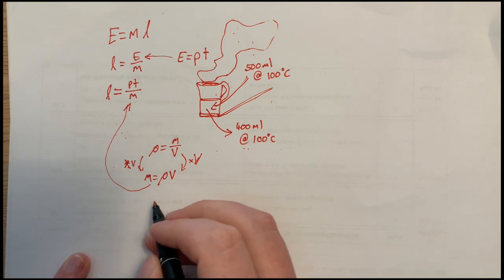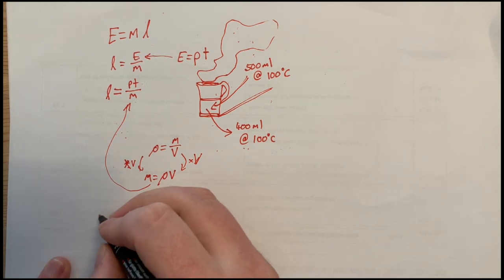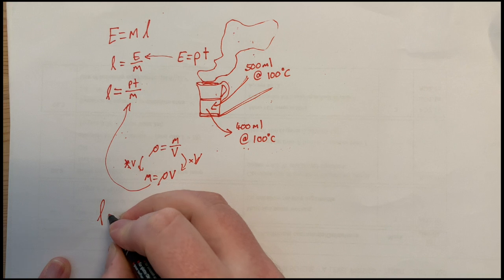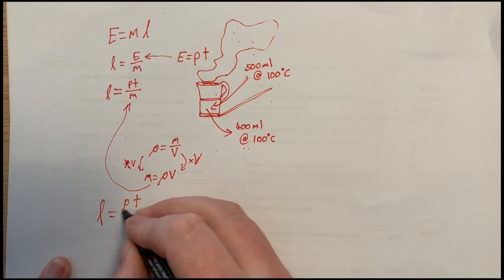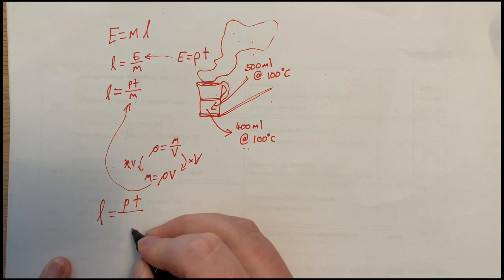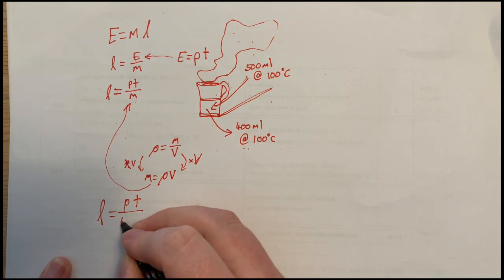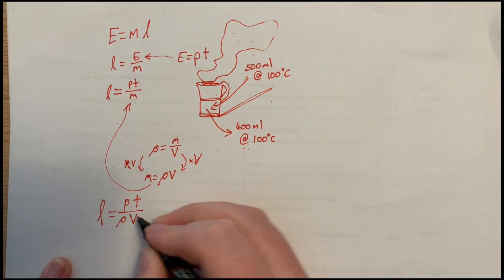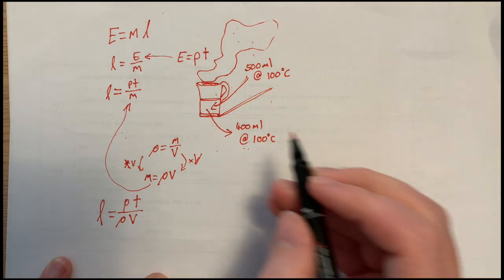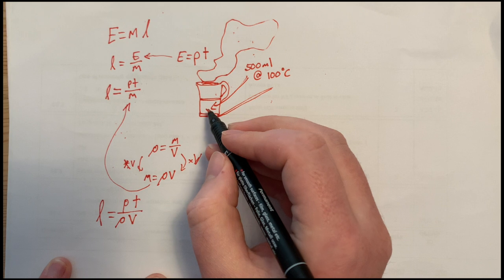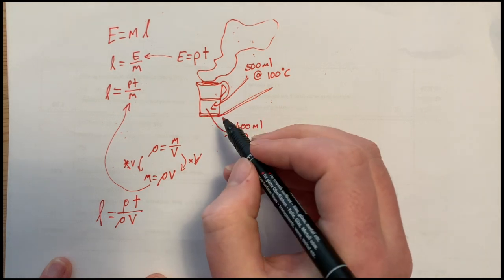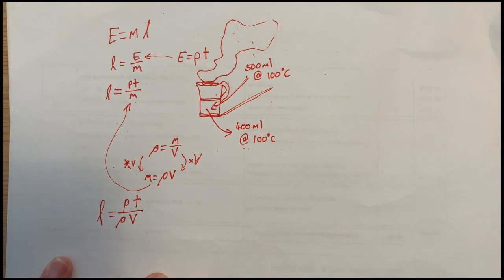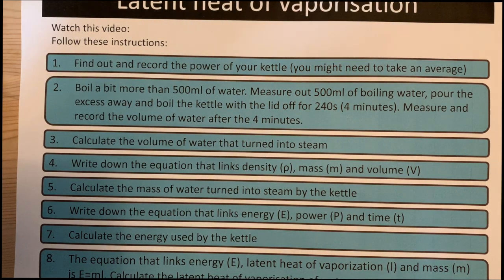So the final equation is: latent heat of vaporization equals the power of the kettle times the time it's on, divided by the density of water times the change in volume of water that's boiled off — not the volume before or after, but the change in volume between the two.